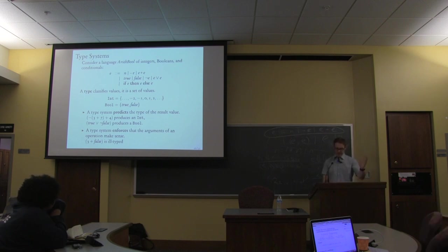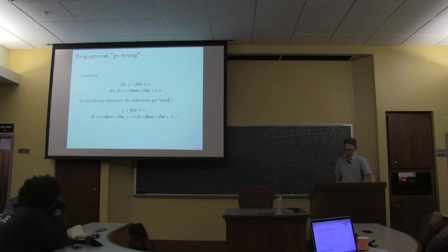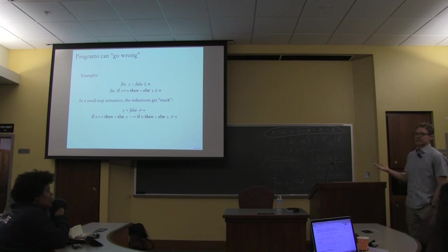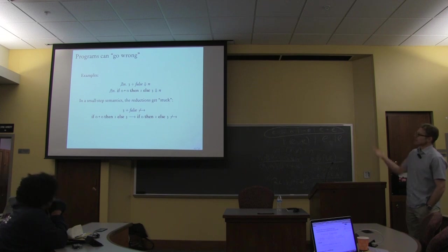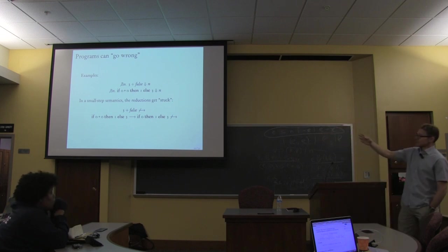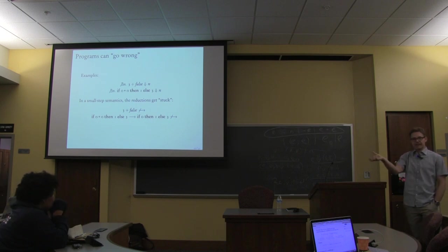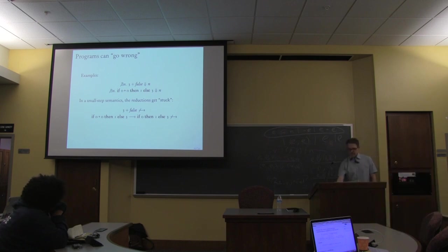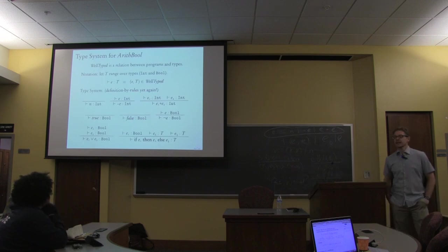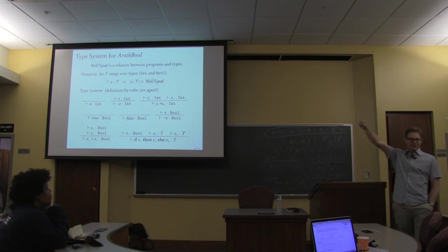In small step semantics, you might step for a while but at some point get stuck — at a program that can't do another step but isn't in a final state. We're trying to prevent programs that can go wrong. Here is a type system for the arith-bool language — definition by rules, third time is a charm. We're defining a relation called 'well-typed' on arith-bool expressions and types. The types are just int and bool — those two symbols.